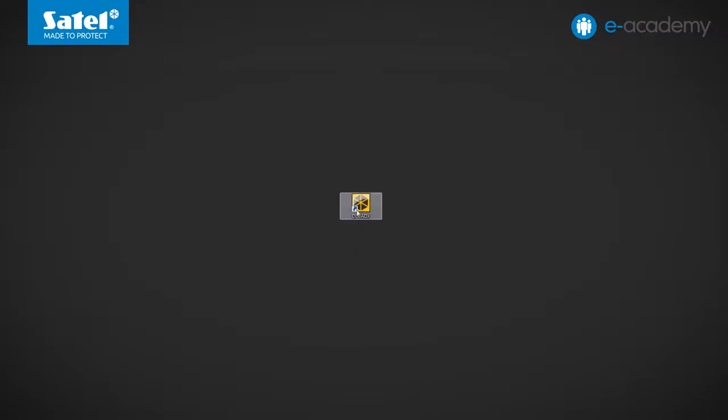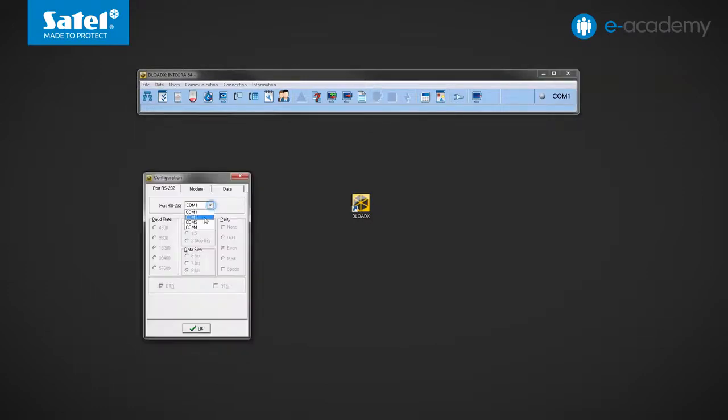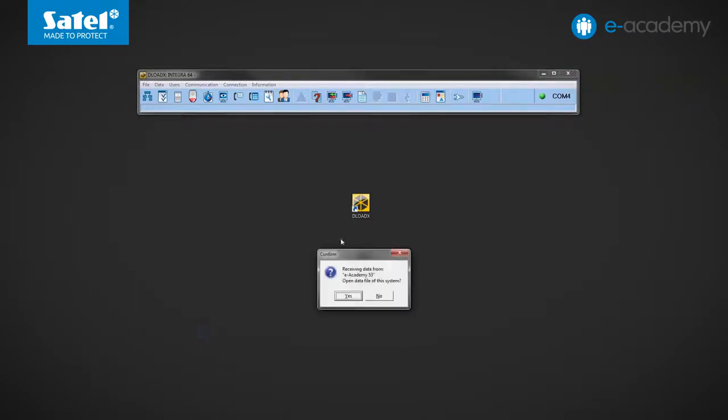Now I start the DLOADX program. Press the button with the wrench symbol on it to select the COM port to which the control panel is connected. Click OK. A window opens to inform you that the report of the alarm system that was configured in the previous episode has been received.